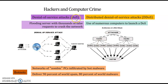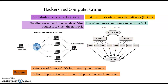And then we have the DoS attack — Denial of Service attack. A DoS attack floods a server with thousands of false requests to crash the network. The attacker uses many zombies — many compromised machines — to attack a single server all at once. When there are too many requests, the system cannot handle them. This is what we call a DoS attack, or more specifically a DDoS — Distributed Denial of Service attack.